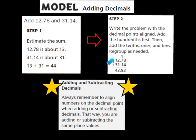We're adding 12 and 78 hundredths plus 31 and 14 hundredths. 8 plus 4 is 12, so write the 2 down and regroup the 1. 7 plus 1 is 8, plus the regrouped 1 is 9, so write the 9 down. Our decimal points are aligned. Then we add 2 and 1 to get 3, and 1 plus 3 gives us 4. Our sum is 43 and 92 hundredths, which is close to our estimated answer of about 44.